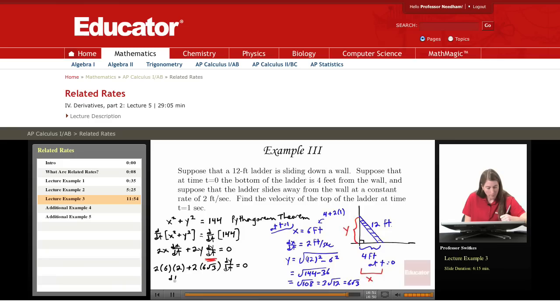So solving for dy dt, I'm going to move the 2 times 6 times 2, which is just a 24. I'm going to move that to the right. So we'll have minus 24. And then the 2 times 6 times radical 3 is a 12 radical 3. So we have minus 24 over 12 radical 3. That's negative 2 over radical 3. That's negative 2 radical 3 over 3.